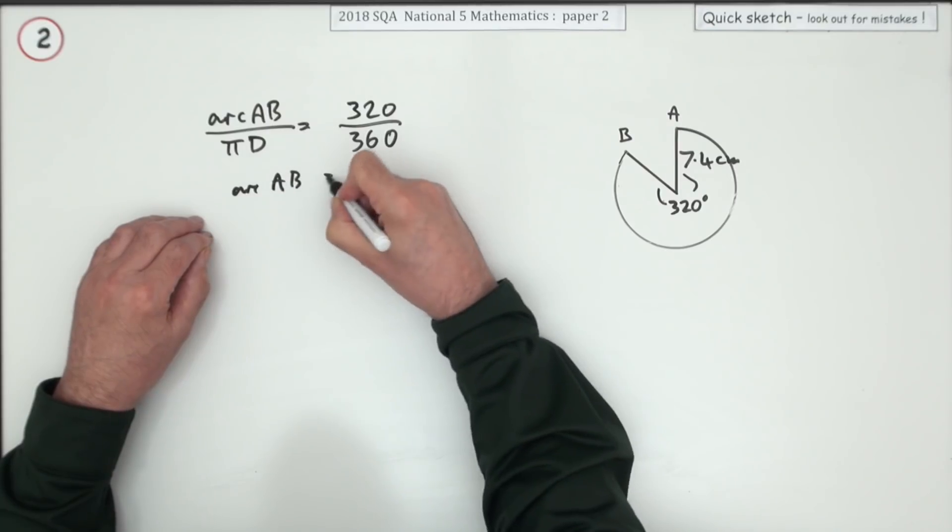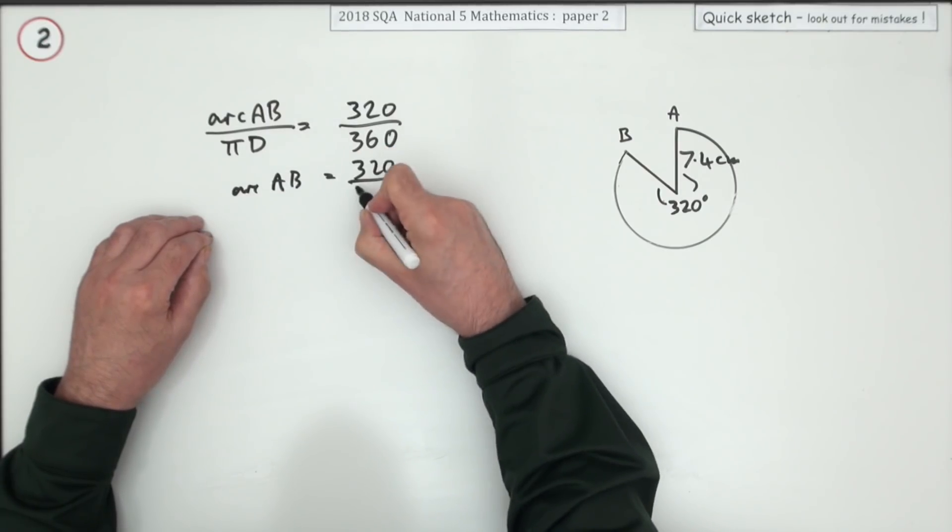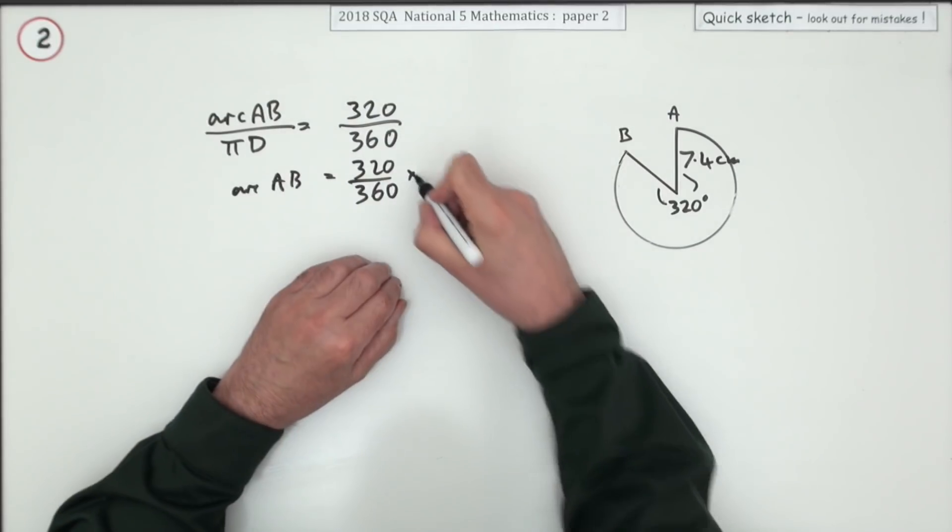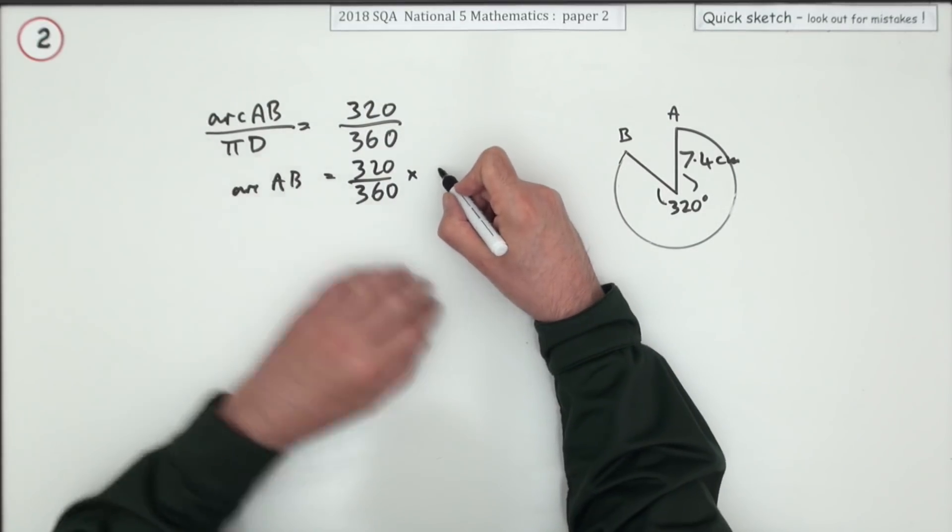So arc AB is going to be 320. You could have cancelled it down. At least knocked off the zeros. But you're using your calculator. Let it do the donkey work. Times pi D.